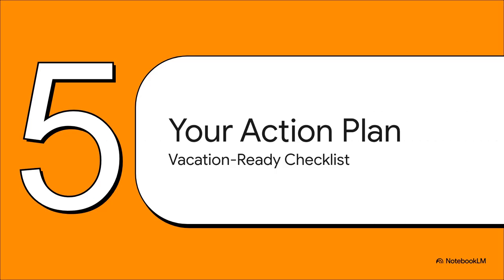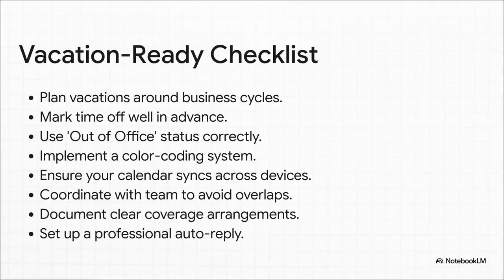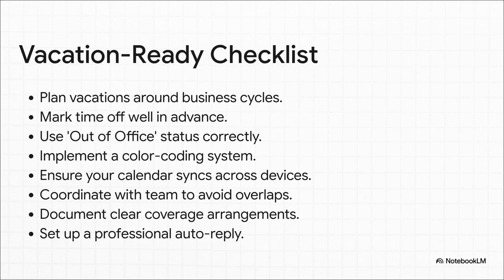Alright, to pull this all together and make it super easy to remember, we've put together one final actionable checklist — your vacation-ready cheat sheet. It covers the whole shebang: plan ahead around busy times, get that time on the calendar early, and use the correct out-of-office status. You can even get fancy with color coding. Make sure your calendar syncs everywhere, talk to your team so you're not all gone at once, document who's covering for you, and of course set up that killer auto-reply. Nail these and you're golden. When you think about it, we've taken something as simple as a calendar and turned it into a powerful, strategic tool for the whole team. What other small everyday habit, if everyone just did it the same way, could totally transform how your team works? That's a good one to chew on.